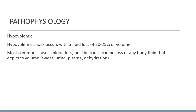Hypovolemic shock is usually the result of a loss of approximately 25-30% of intravascular fluid volume. Intravascular volume loss can occur from many things, but the most common cause is blood loss — either internally or externally — from trauma. Other causes include plasma loss from extensive burns, extreme dehydration, or fluid shifts from intravascular to interstitial space. A loss of only 15% of intravascular volume can produce the initial symptoms of shock: rapid pulse, pale skin, dizziness, nausea, and thirst.